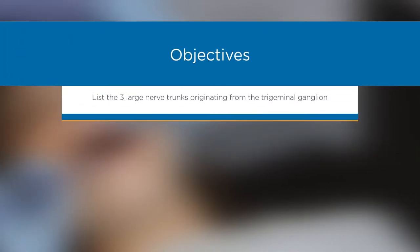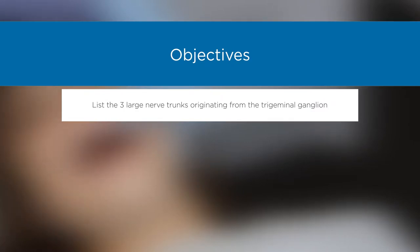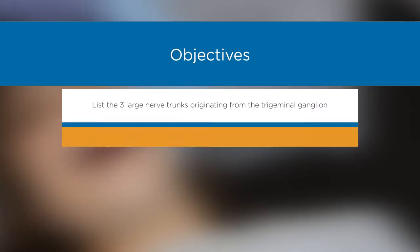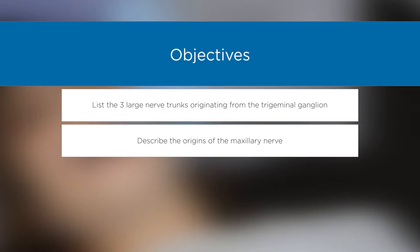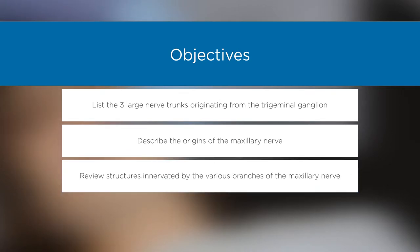Objectives: List the three large nerve trunks originating from the trigeminal ganglion. Describe the origins of the maxillary nerve. Review structures innervated by the various branches of the maxillary nerve.